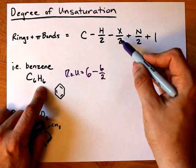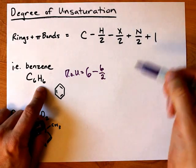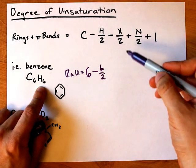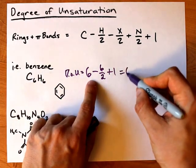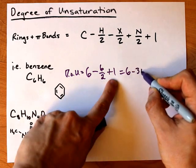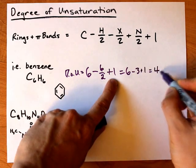Minus halogen atoms divided by two—not an issue. Plus nitrogens divided by two—not an issue. Plus one. That's six minus three plus one, which makes four.